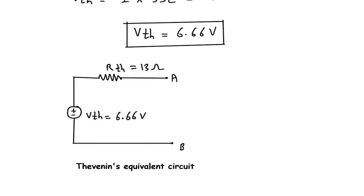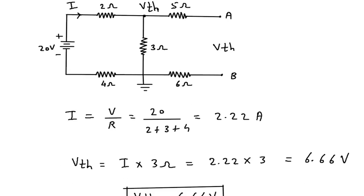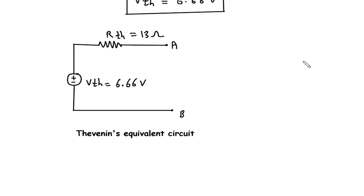So for the network shown in this figure, this is the Thevenin equivalent circuit across terminals A and B.